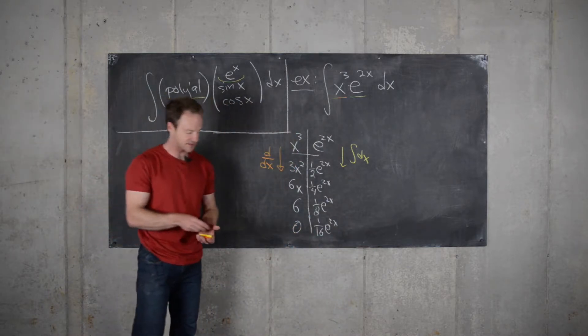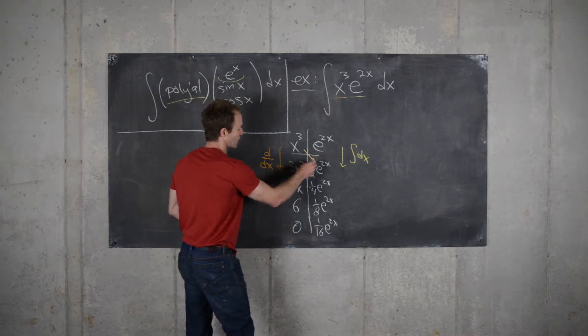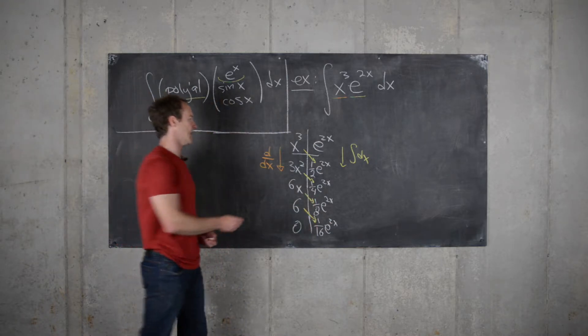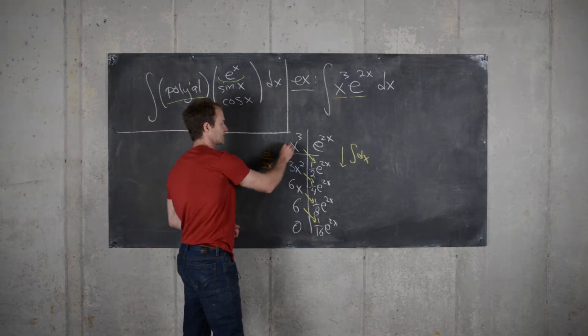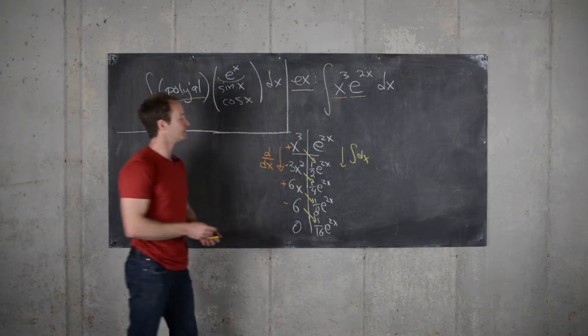Okay, so now our table is totally set up and we're ready to go. Now we want to match on the diagonal as follows and then alternate the signs. So we'll give this a plus, this a minus, this a plus, this a minus.